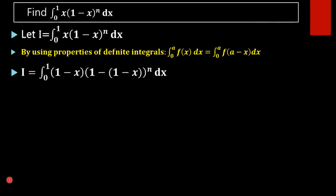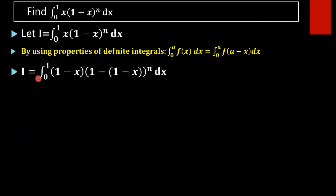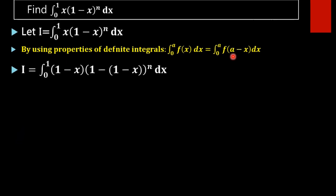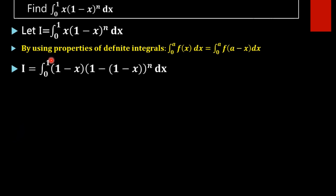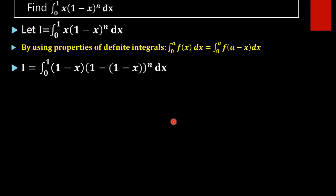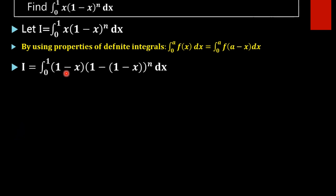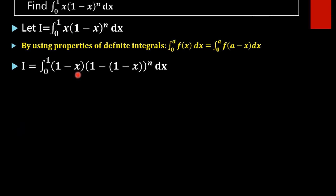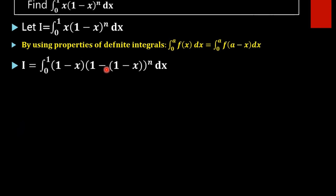We rewrite i as integral 0 to 1, replacing x with a minus x. Here a equals 1, so we replace x with 1 minus x. This gives us integral 0 to 1 of (1 minus x) into (1 minus (1 minus x)) whole raised to n.